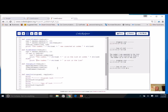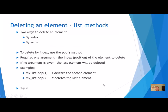Now let's talk about deleting elements. We've talked about adding them and finding them — now let's delete them. There are two ways to delete an element, just like there are two ways to insert. We can delete by index or by value. To delete by index, use the pop method — it requires one argument, which is the index of the element to delete. Whatever's at that index will be removed. If you call pop with no argument, the default is the last element, similar to how append always goes to the end.